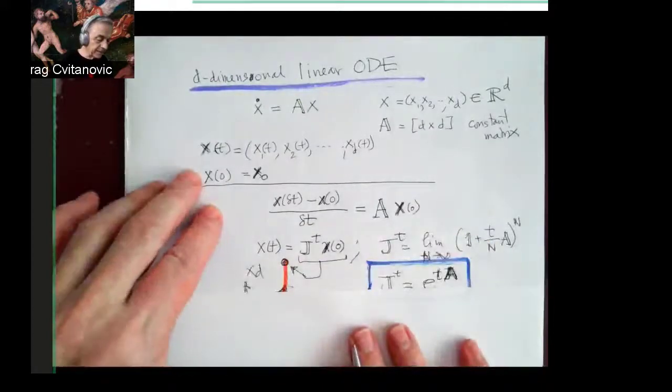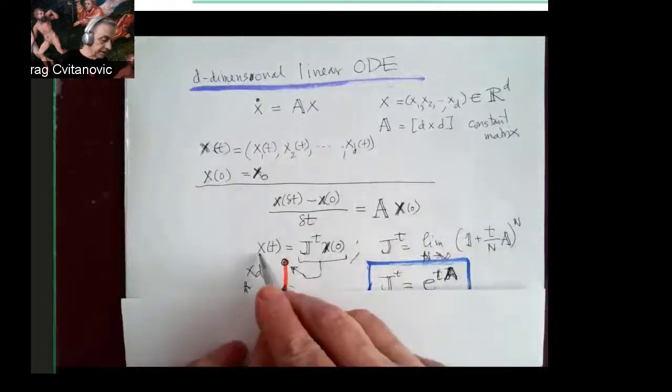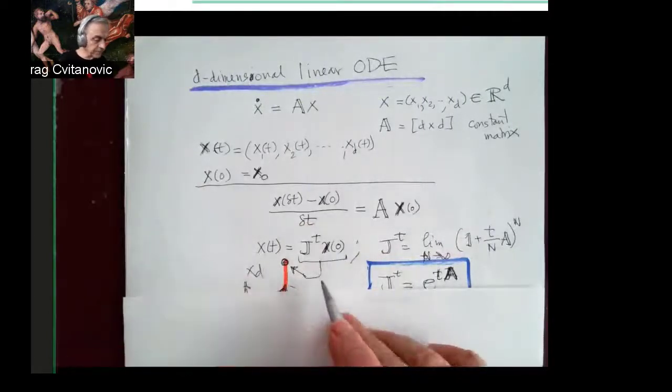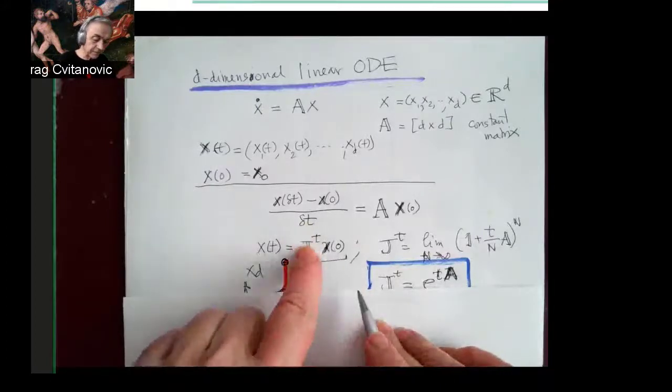And this is the matrix that says after time T, your original position gets mapped into new position. And as it's a linear problem, that's mapped by some particular matrix.